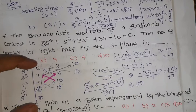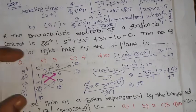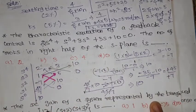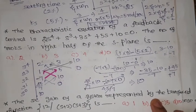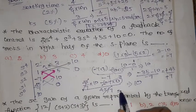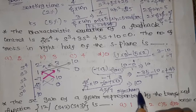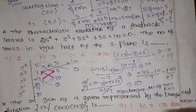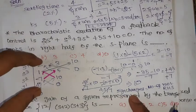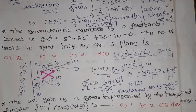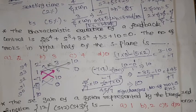Now we have completed the first column of the Routh array. To find the number of roots in the right half of the s-plane, we look at the first column alone and count the number of sign changes. The number of sign changes in the first column equals the number of roots in the right half of the s-plane.